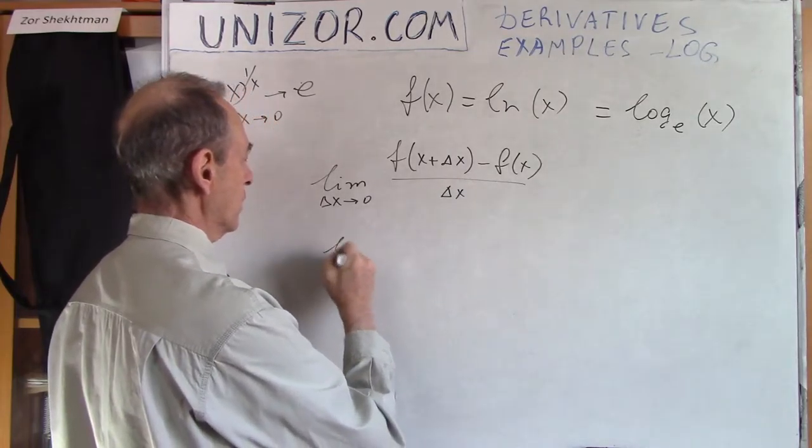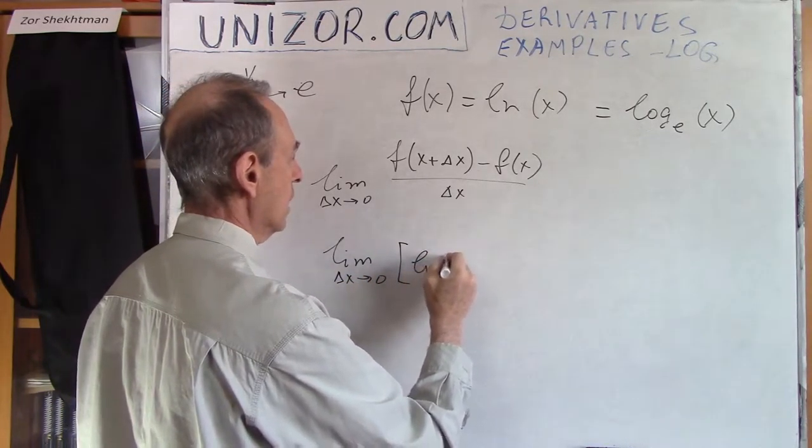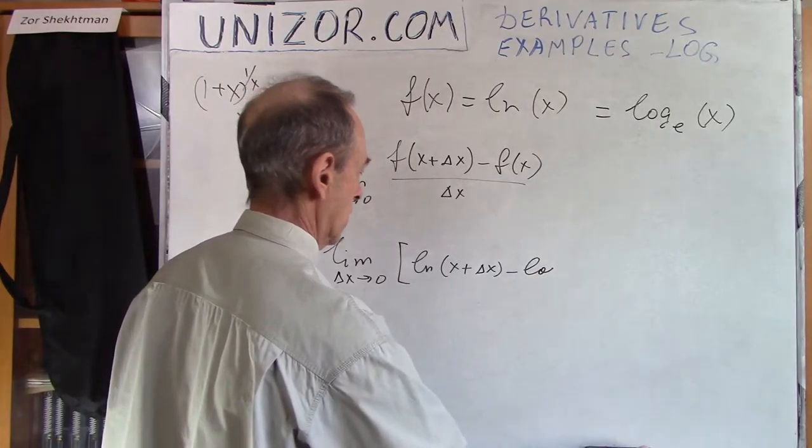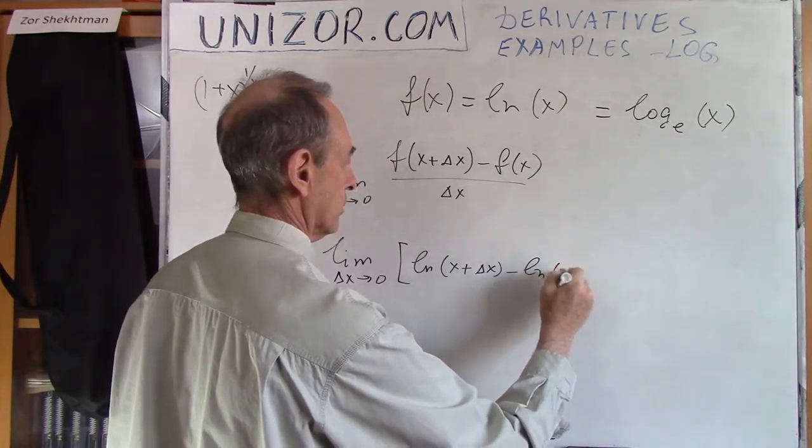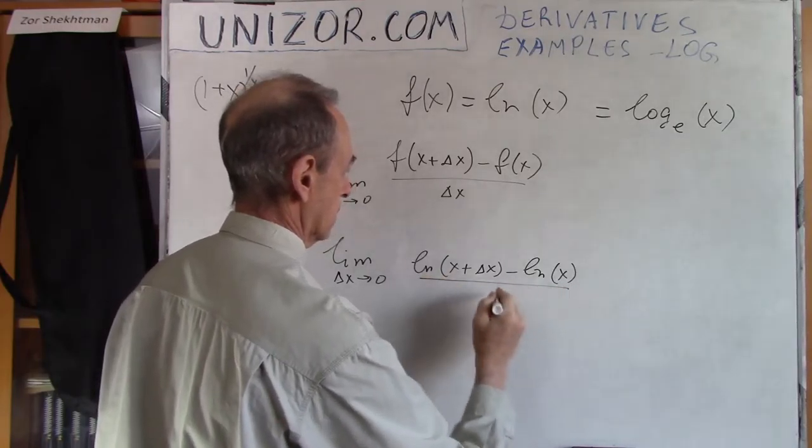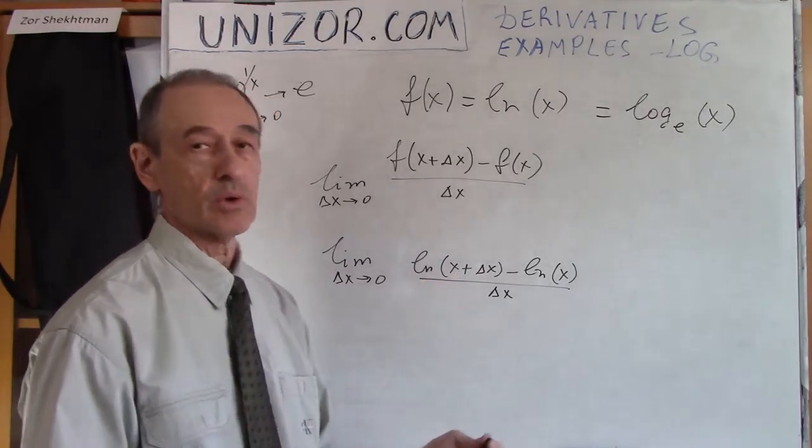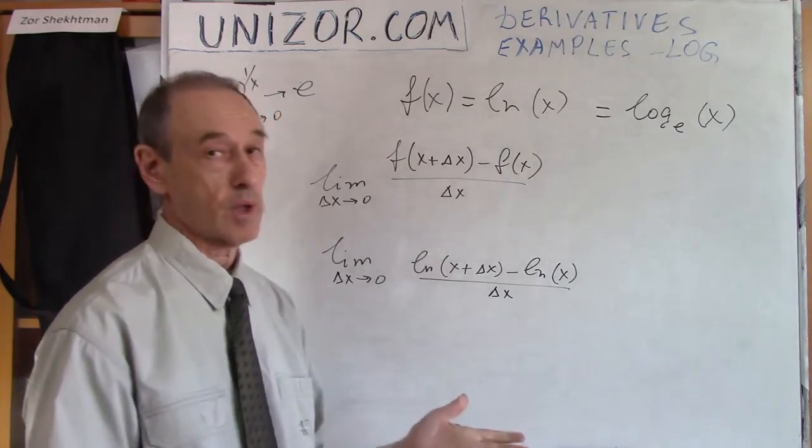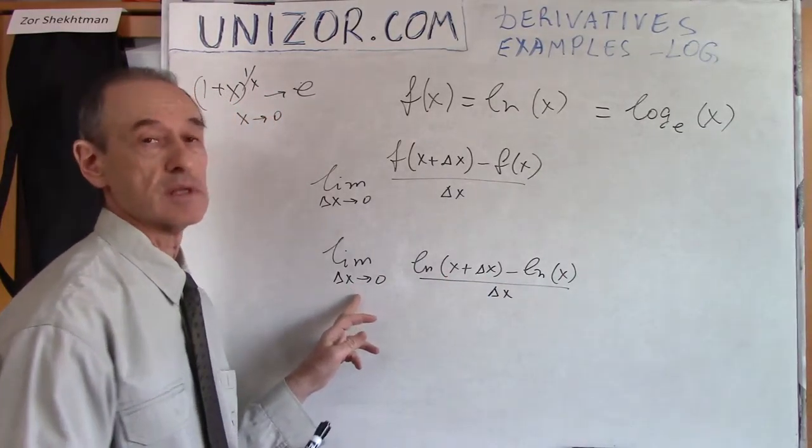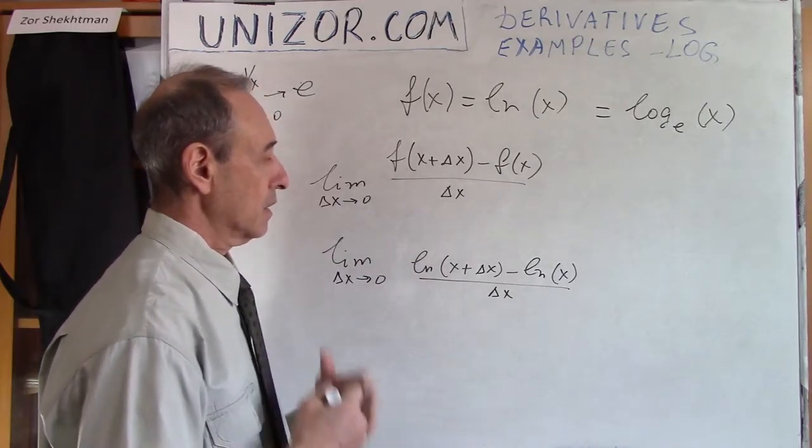In this particular case, we are talking about limit as delta x goes to 0 of logarithm of x plus delta x minus natural logarithm of x, divided by delta x. This is basically the definition where x belongs to the domain of the logarithm, which is positive numbers. And delta x is some infinitesimal variable. X is fixed, delta x is an infinitesimal variable.